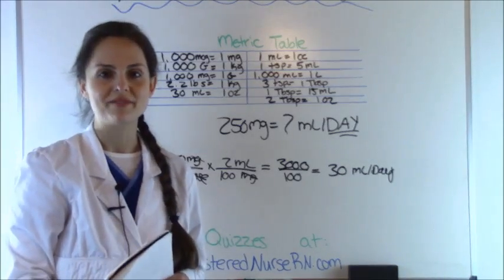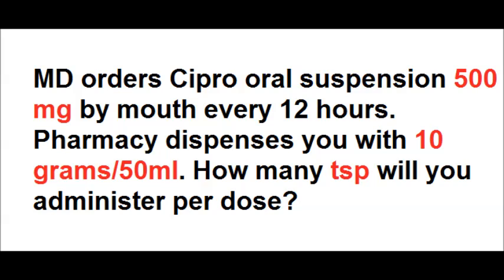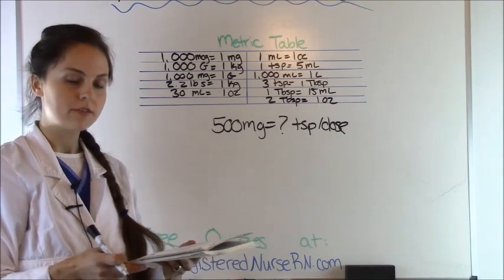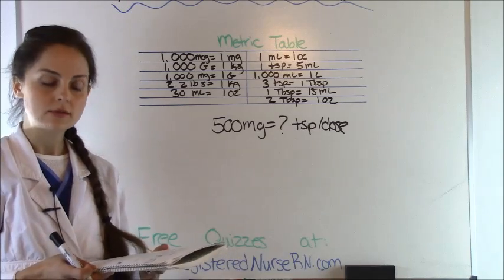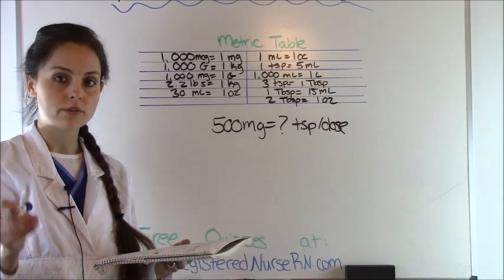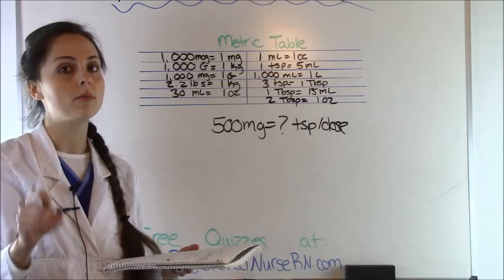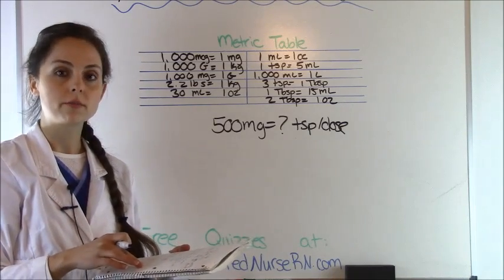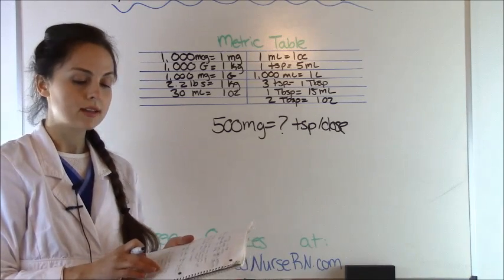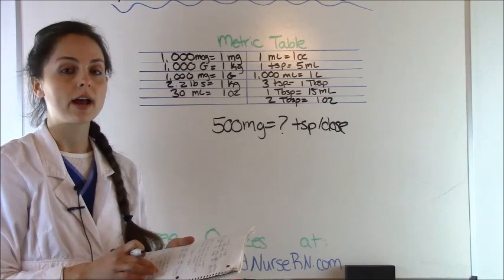Let's move to our last problem, number five. MD orders Cipro oral suspension 500 milligrams by mouth every 12 hours. The pharmacy dispenses you with 10 grams per 50 mLs. How many teaspoons will you administer per dose? The pharmacy gives 10 grams per 50 milliliters but the doctor ordered 500 milligrams — so right away you know this is a multi-step problem because we'll need to convert milligrams to grams. The problem also asks for teaspoons, not milliliters, so there will be an extra conversion step from milliliters to teaspoons — making this about a five-step problem.